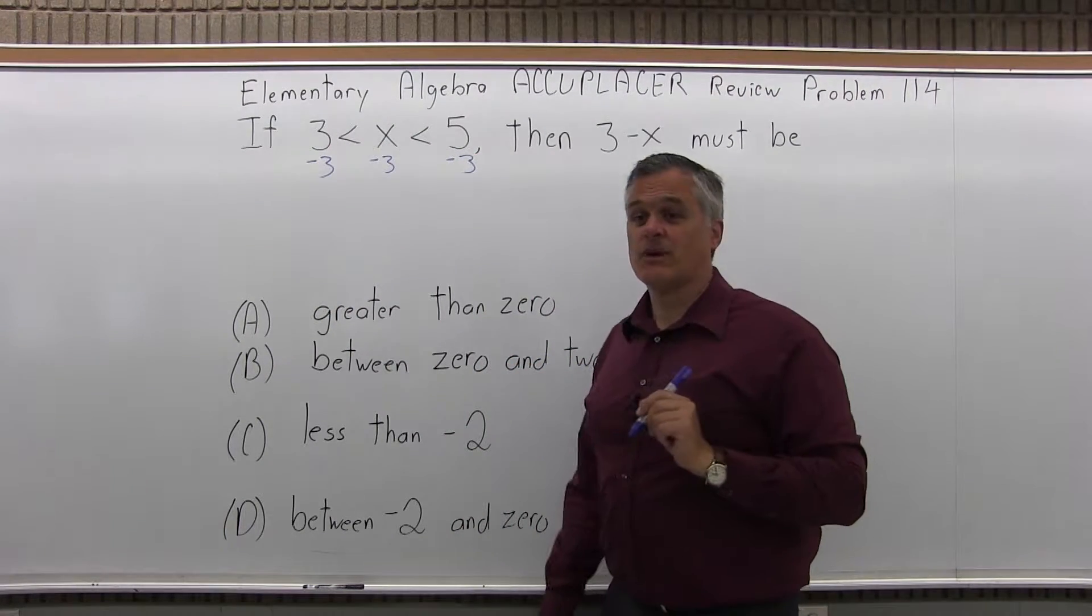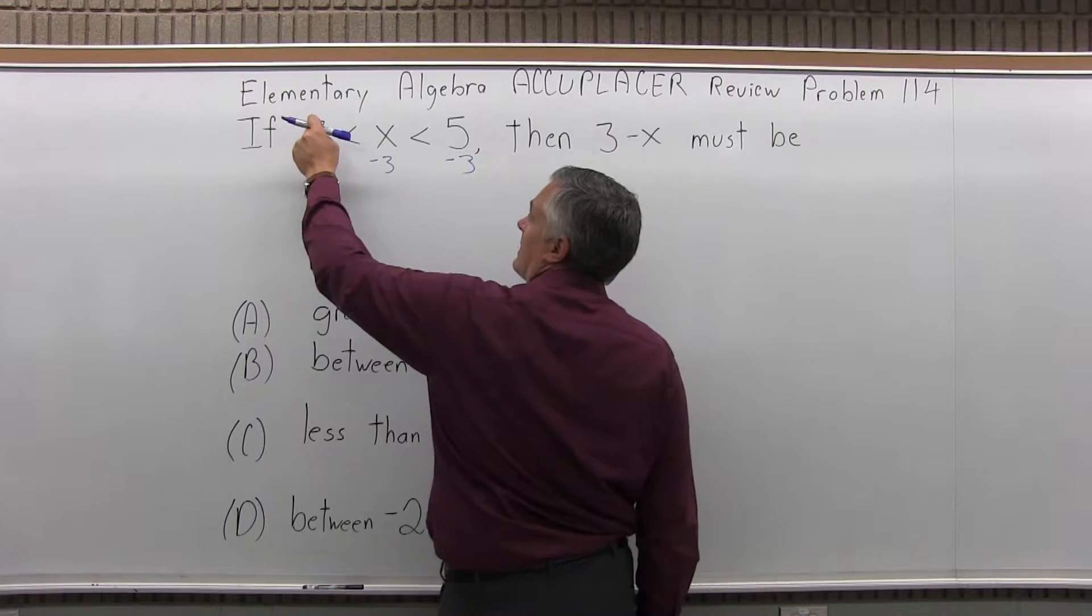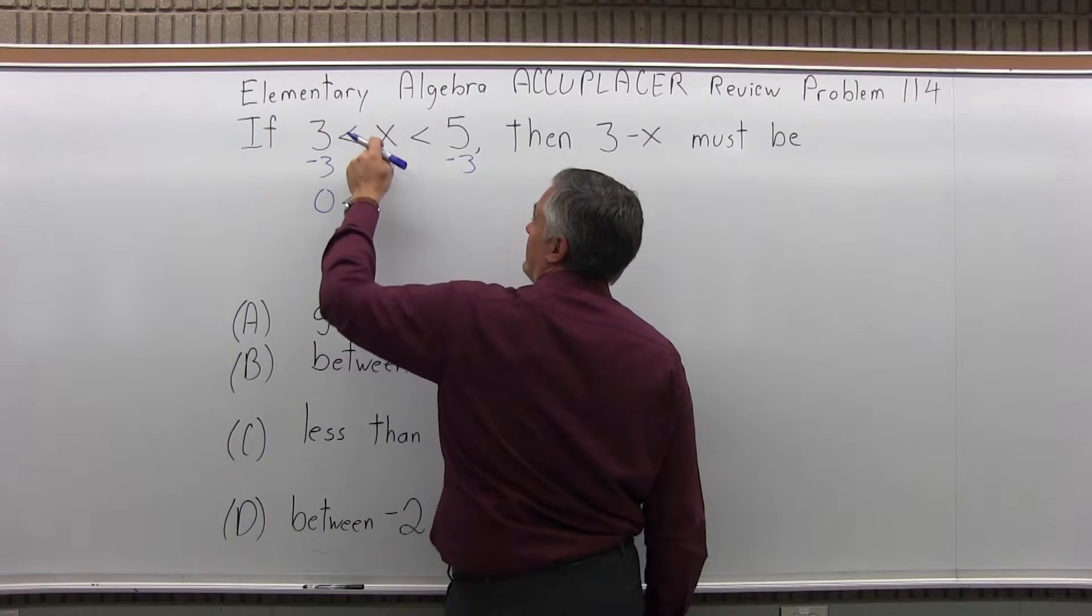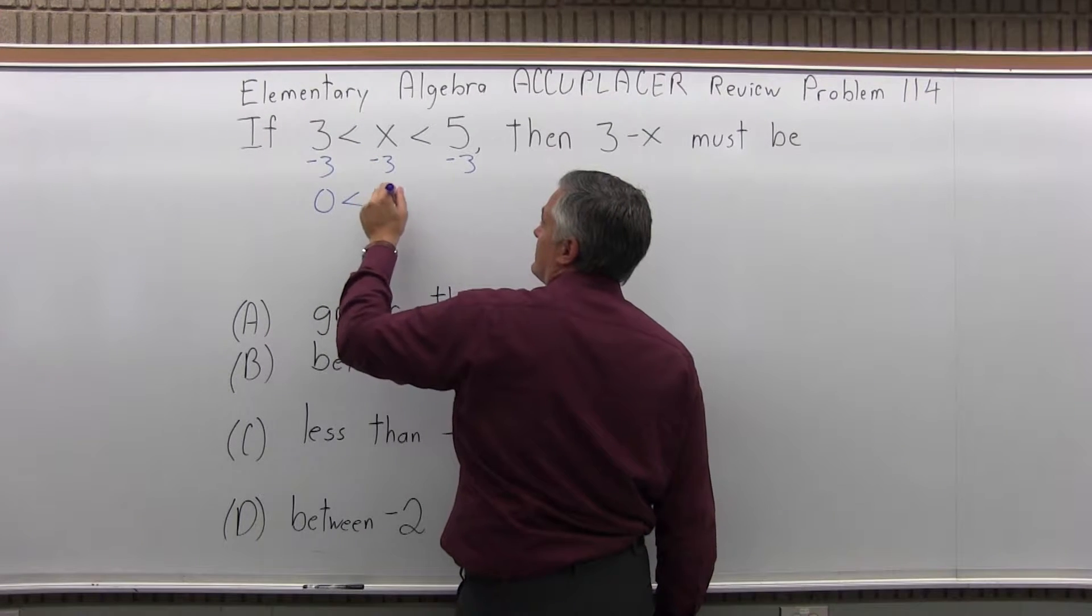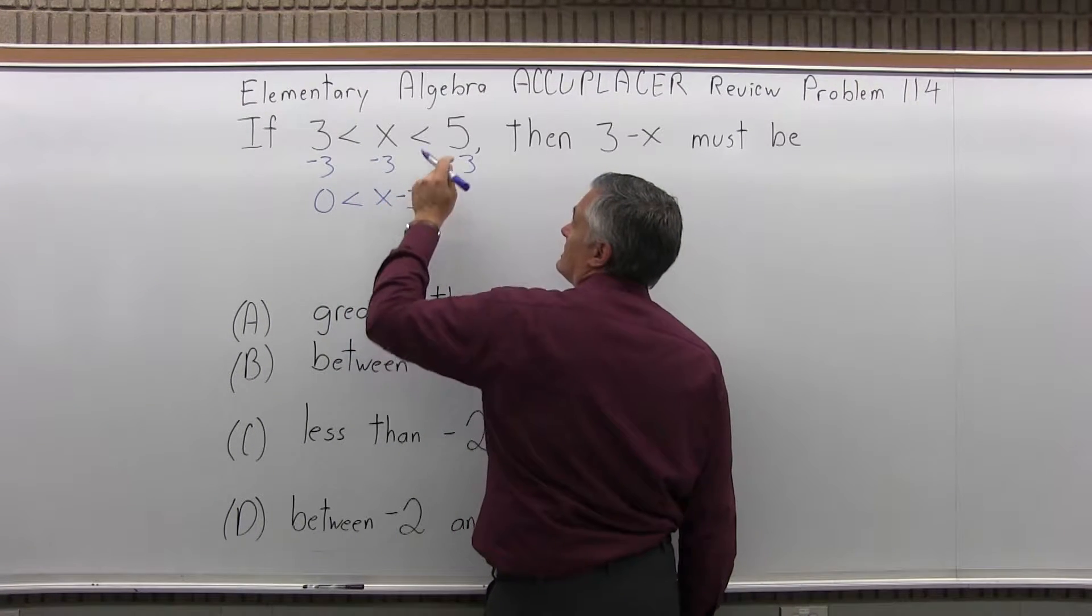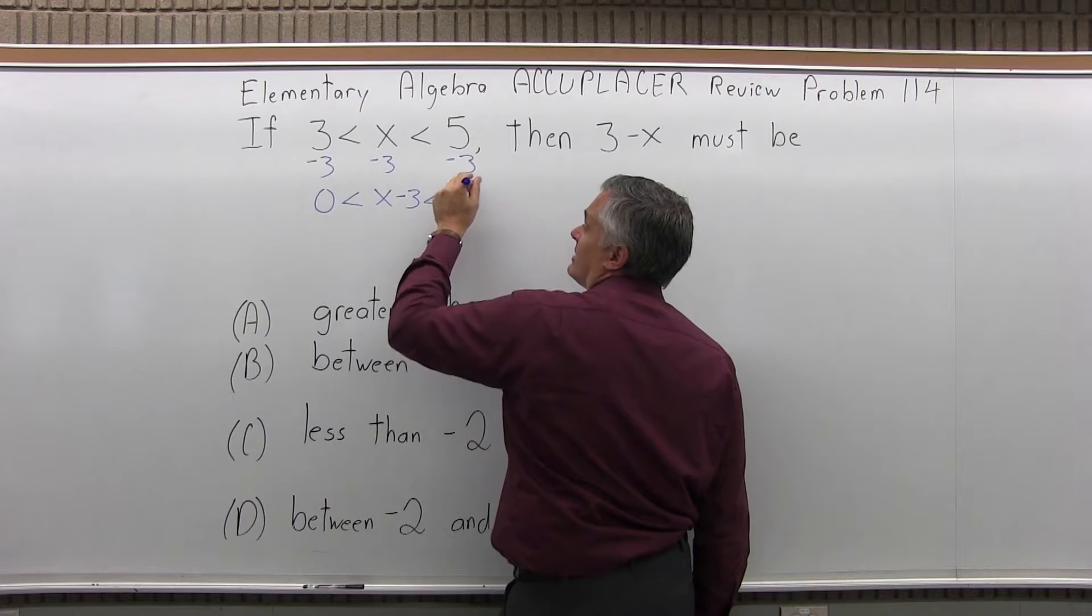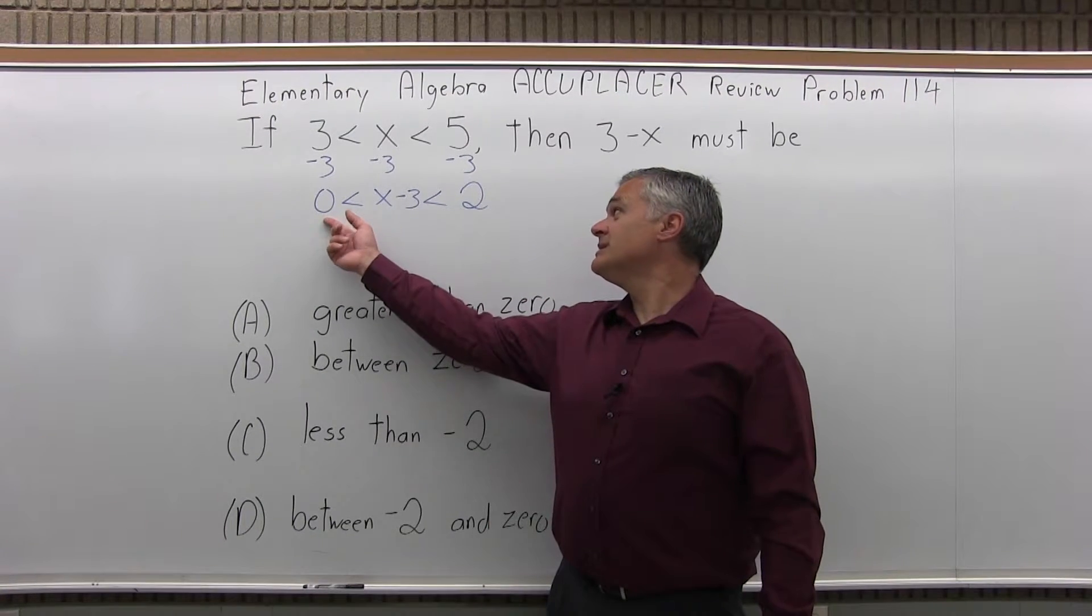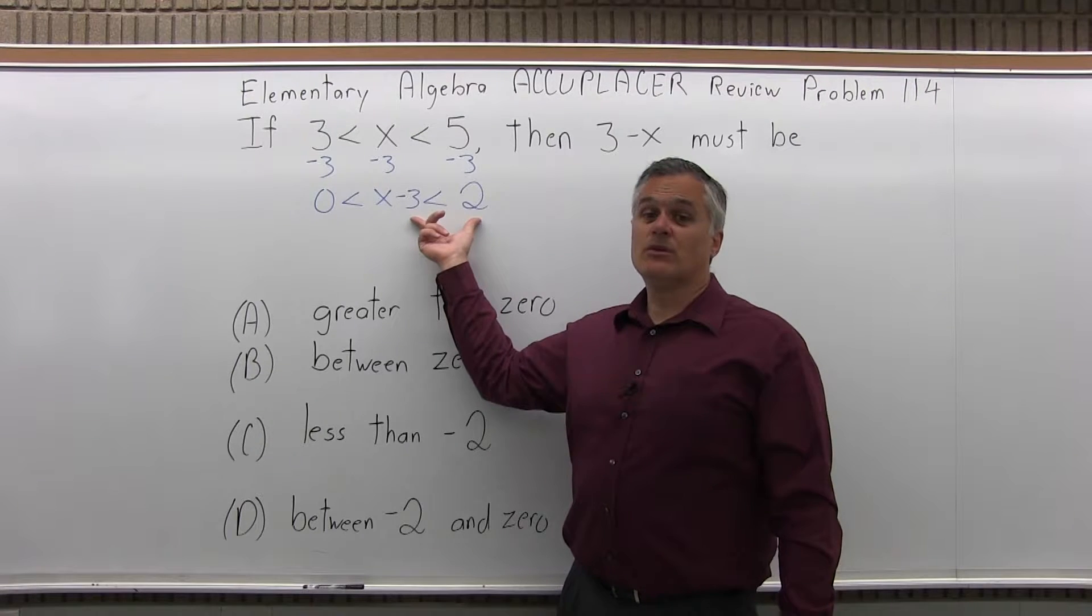Let me do minus 3 everywhere. So 3 minus 3, I'm going to have a 0, is less than x minus 3, just stays x minus 3, is less than 5 minus 3, is 2. So x minus 3 is between 0 and 2.